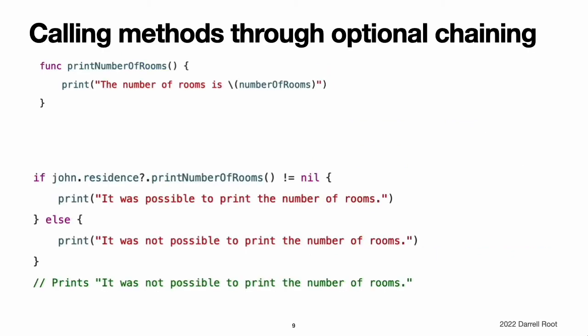Calling methods through optional chaining. You can use optional chaining to call a method on an optional value and to check whether that method call is successful. You can do this even if that method does not define a return value. The printNumberOfRooms method on the residence class prints the current value of number of rooms. This method does not specify a return type. However, functions and methods with no return type have an implicit return type of void, as described in functions without return values.